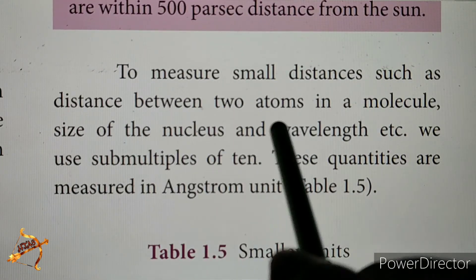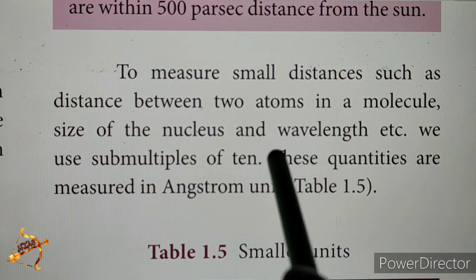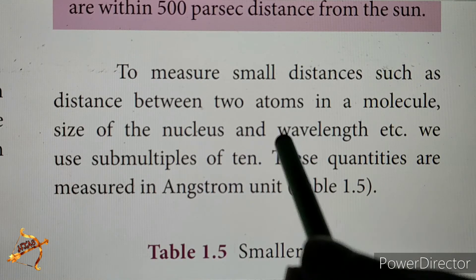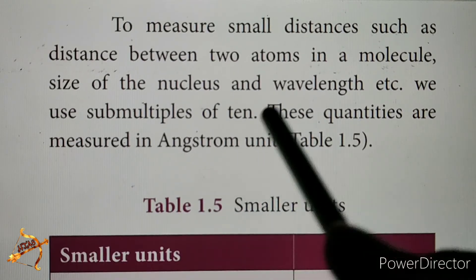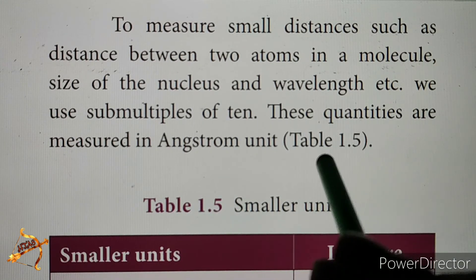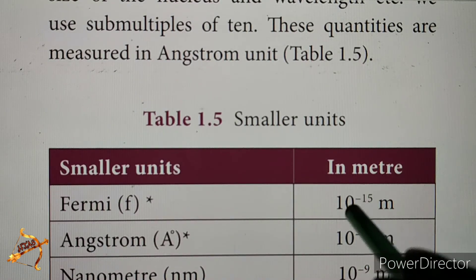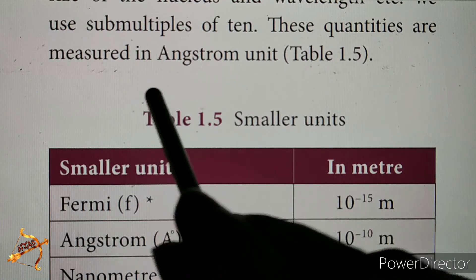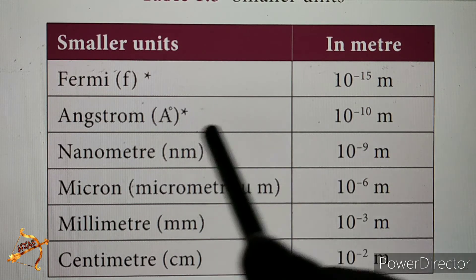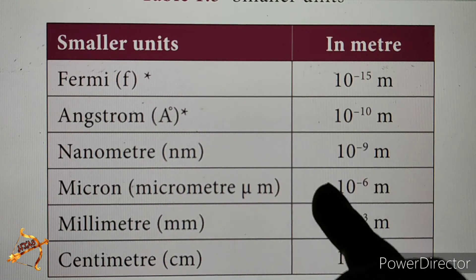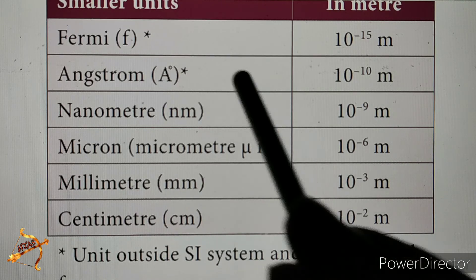To measure very small distances, such as the distance between two atoms in a molecule or the wavelength of light, we use submultiple units. These quantities are measured in angstrom (10⁻¹⁰ m), nanometer (10⁻⁹ m), and micrometer (10⁻⁶ m).